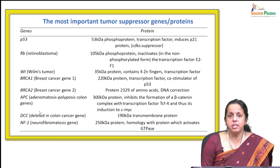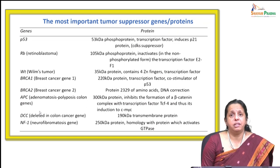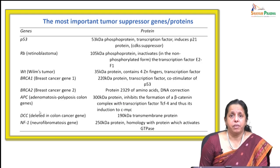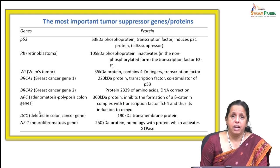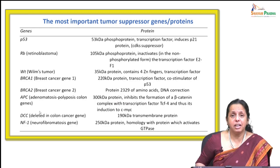The most important tumour suppressor genes include P53, retinoblastoma, Wilms' tumour, BRCA1, BRCA2, the adenomatous polyposis coli gene, DCC, and NF1. For some normal cells to be rendered immortal, both RB and P53 must be inactivated. The DNA human papillomavirus, a causative agent in cervical cancer, inhibits both these critical proteins through binding and inactivation via HPV viral proteins E6 and E7, biochemically achieving the same outcome as carcinogens.